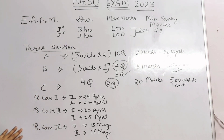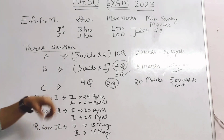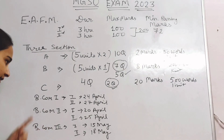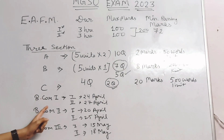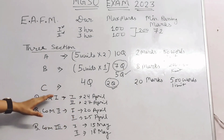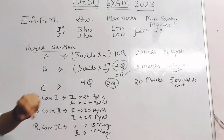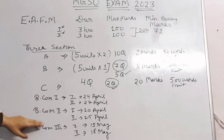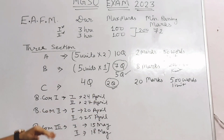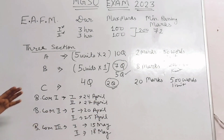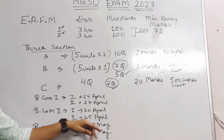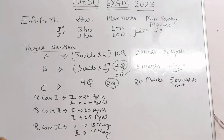MGSU has also uploaded a timetable. For first year, Paper 1st is on 24 April and Paper 2nd is on 27 April. For second year, Paper 1st is on 20 April and Paper 2nd is on 25 April. For final year, Paper 1st is on 15 April and Paper 2nd is on 18 April.